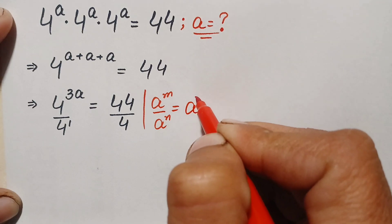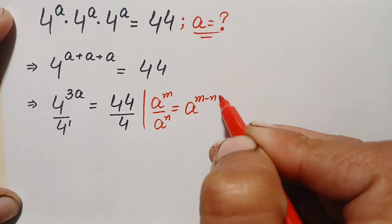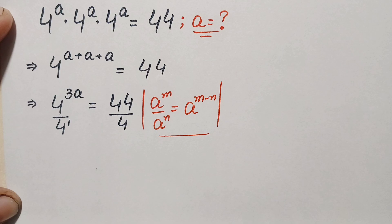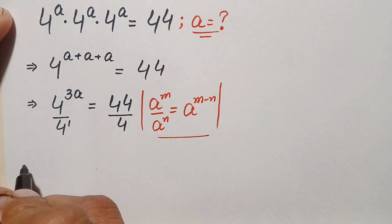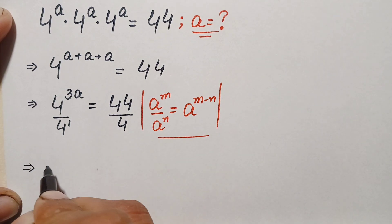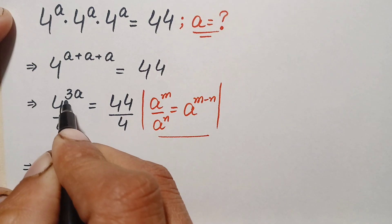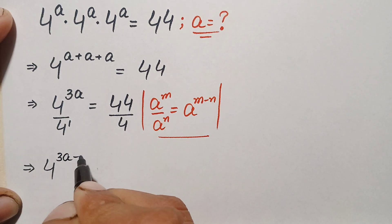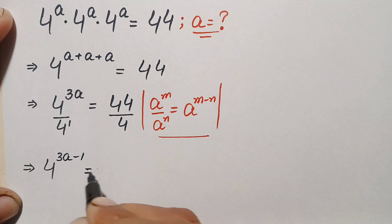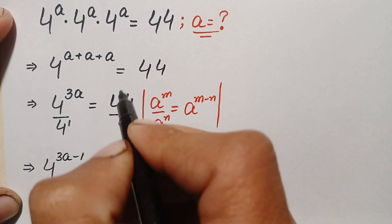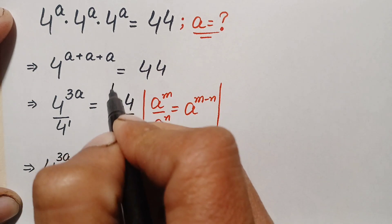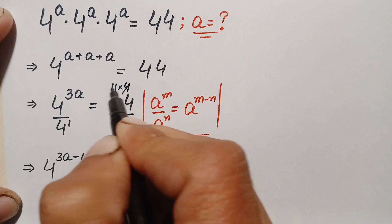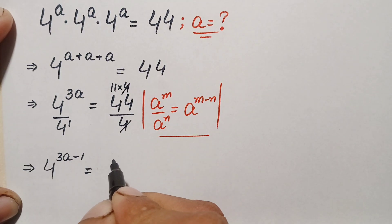Using this exponential identity, dividing both sides by 4, the left hand side becomes 4 raised to power 3a minus 1. On the right hand side, 44 can be written as 11 times 4, so the 4s cancel, leaving 11. So we have 4 raised to power (3a − 1) equals 11.